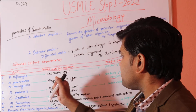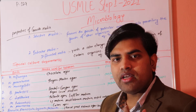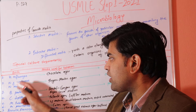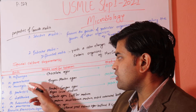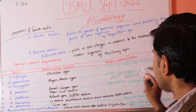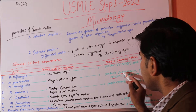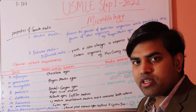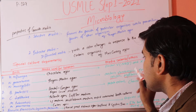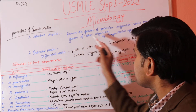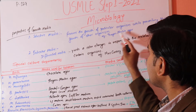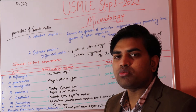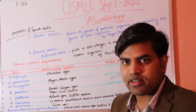Selective media favors the growth of a particular organism while preventing the growth of others. To select for Neisseria gonorrhoeae or Neisseria meningitidis among normal flora, we need to kill the normal flora without killing the target organism. Thayer-Martin agar contains vancomycin, trimethoprim, colistin, and nystatin. Vancomycin kills gram-positive bacteria, colistin and trimethoprim kill gram-negative bacteria, and nystatin kills fungi — but none of these kill Neisseria gonorrhoeae.